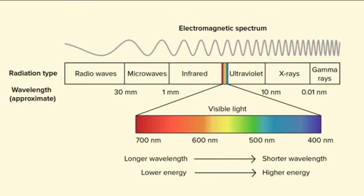Let us begin by knowing the characteristics of light. Light is an example of an electromagnetic wave. Sound is a mechanical wave that needs a medium to propagate, but electromagnetic waves are the opposite — they don't need a medium to travel, like radio waves, microwaves, infrared, visible light, ultraviolet, X-rays, and gamma rays.